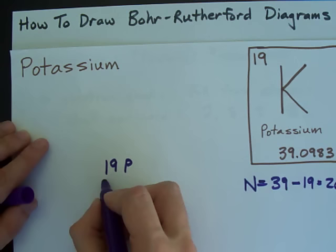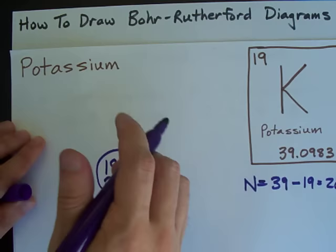In this case, it turns out we have 20 neutrons. So you write 20N, and that's our nucleus.